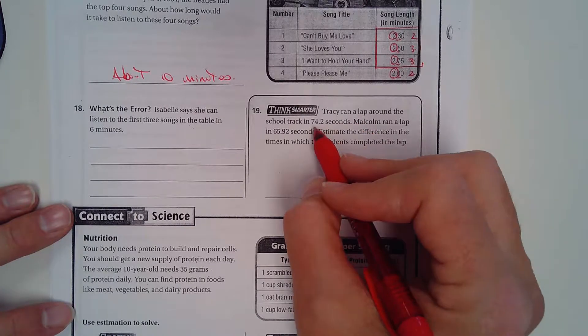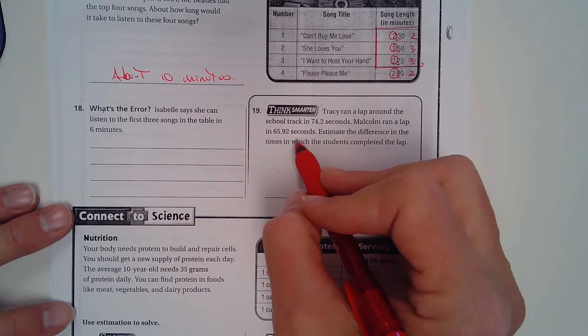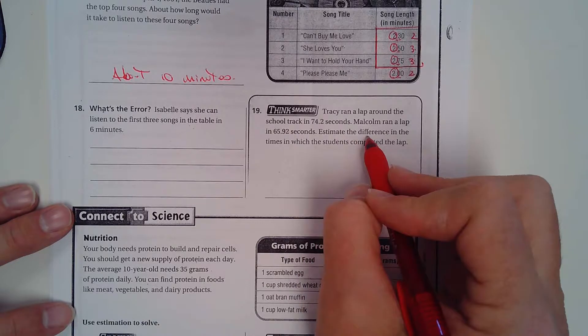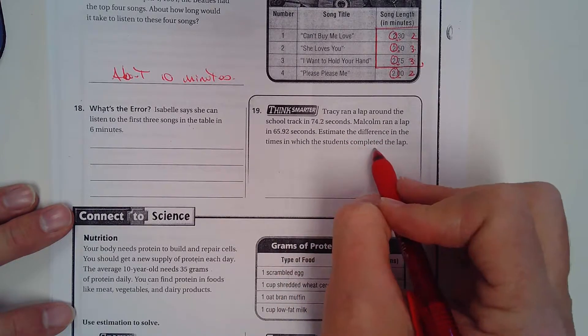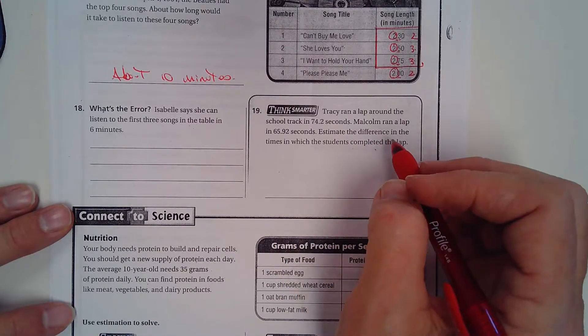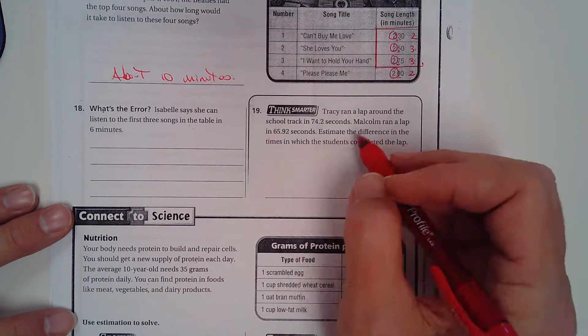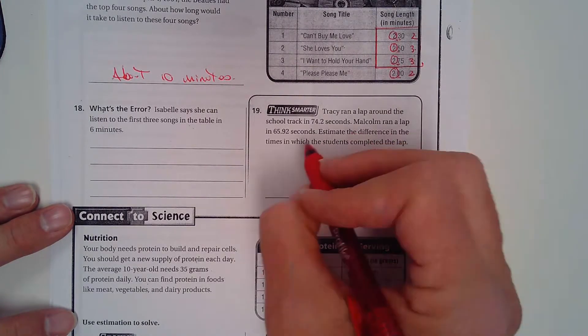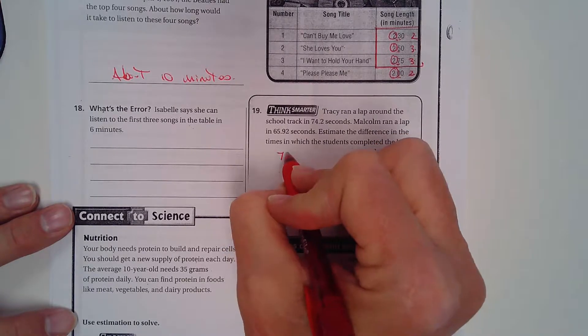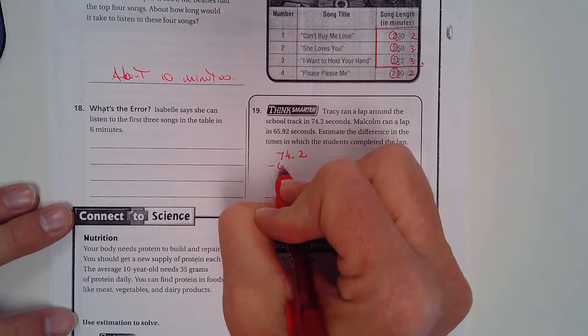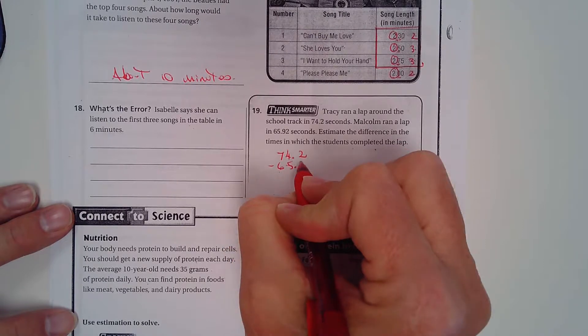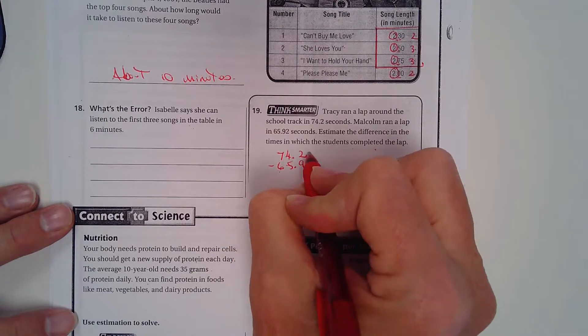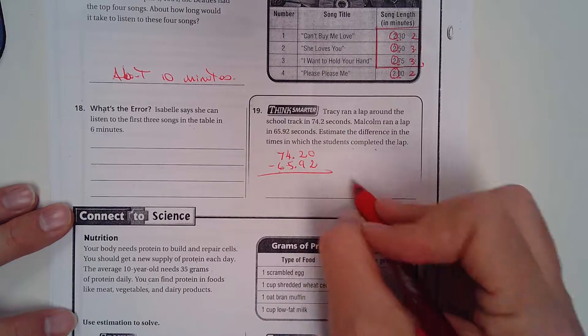So she ran a lap in 74.2 seconds. Malcolm ran a lap in 65.92 seconds. Estimate the difference in the times in which the students completed the lap. Estimate the difference - you know what, you don't need to estimate. Tell me the difference. In other words, subtract. It's going to be 74.2 and you're going to subtract 65.92. And just give me your answer, okay.